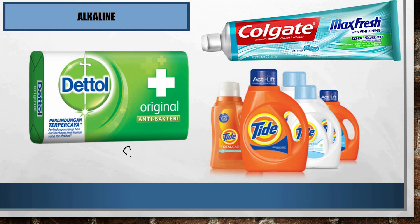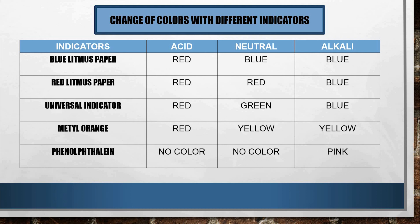Alkaline substances include soap used for bathing and toothpaste. Soap and toothpaste must be alkaline because our body and teeth contain bacteria which are acidic, so we need alkaline substances to neutralize them. Detergent is also alkaline because our shirts accumulate sweat which attracts acidic bacteria, and alkaline detergent is needed to clean them.